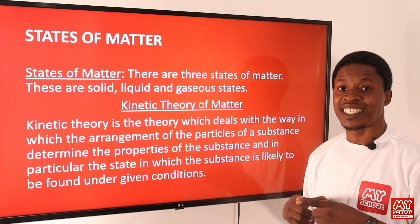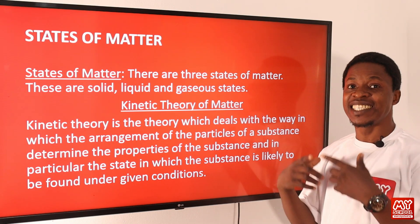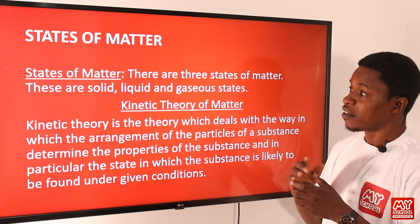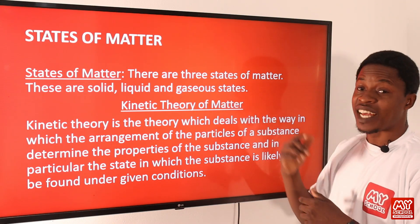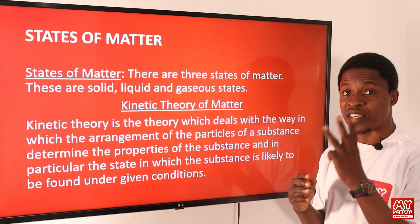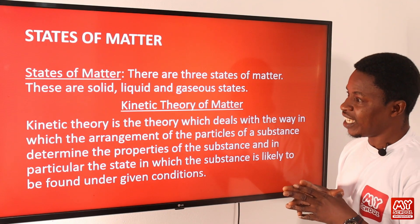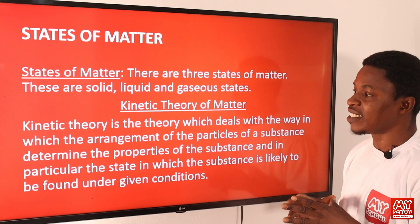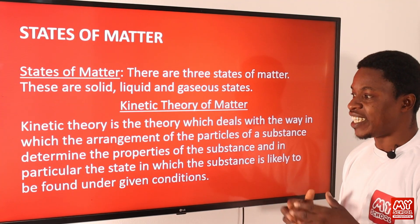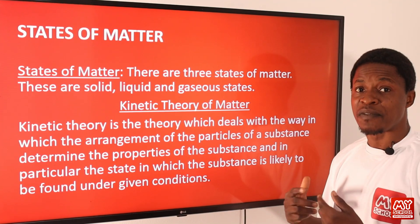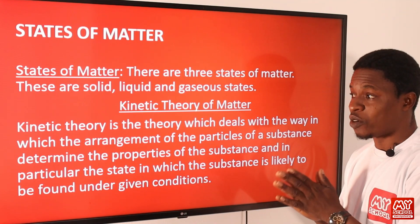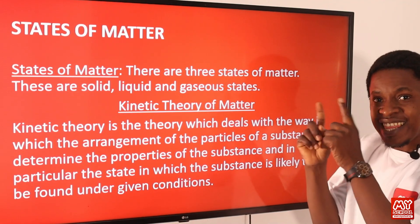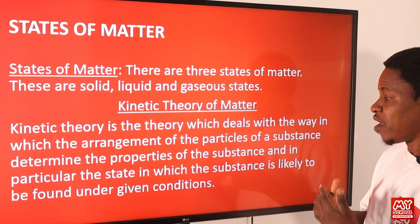States of matter. You'll recall that in our previous video lesson, we talked about matter being anything that has mass and occupies space, and there are three states of matter. Everything that exists exists in three states: solid, liquid, and gases. Kinetic theory of matter deals with the way in which the arrangement of the particles of a substance can determine the properties of that substance, and in particular, the state in which the substance is likely to be found under certain given conditions.